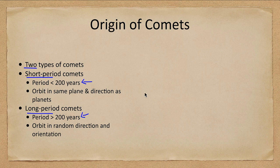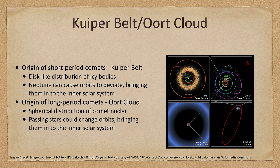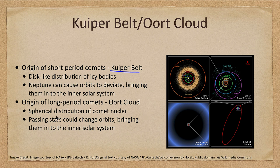Short-period comets orbit in the same plane and direction as the planets, while long-period comets are in random directions. Short-period comets come from the Kuiper Belt — out beyond the orbit of Neptune — where there is a lot of debris orbiting in a disk, much like the asteroids in the asteroid belt.